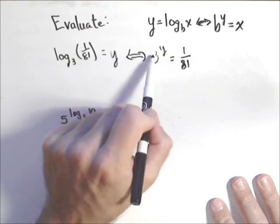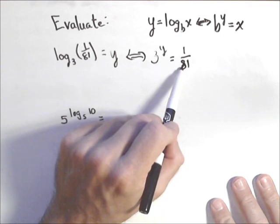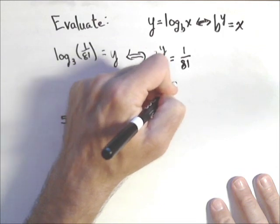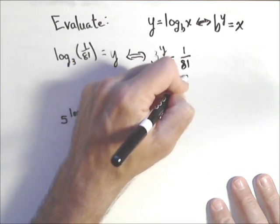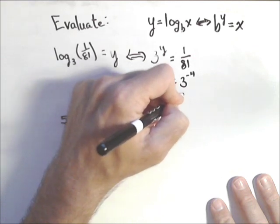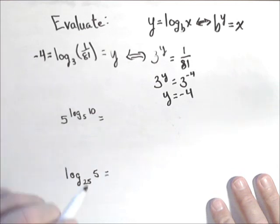can we write this as a base 3? Well, 81 is 3 to the 4th, so 1/81 is 3 to the negative 4th. So 3 to the y equals 3 to the negative 4th, where we get y equals negative 4. This expression simplifies down to negative 4.